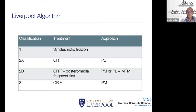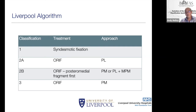The treatment algorithm: type 1 needs some form of syndesmotic fixation. Type 2a — the posterolateral corner — can be fixed from the back via a posterolateral incision. For 2b, if it only extends across the posterior surface a posteromedial incision suffices; if it extends further medially towards the anterior surface of the tibia, you'll need both a posterolateral and a posteromedial incision. The posteromedial incision is just behind the medial border of the tibia in front of tibialis posterior. Type 3 can always be accessed through a posteromedial incision.